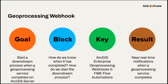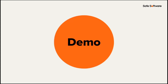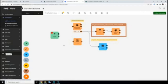Now I'm going to demonstrate the last new webhook type in Enterprise 11: the geoprocessing webhook. Prior to Enterprise 11 there were just organization webhooks. Our goal with this demo is to start a downstream process when a geoprocessing service completes on ArcGIS Server. The blocker is: how do we know it's completed and how do we start that downstream process? The solution is a geoprocessing webhook and an FME Flow automation to catch that webhook message — the result will be near-real-time notification whenever a geoprocessing service completes.